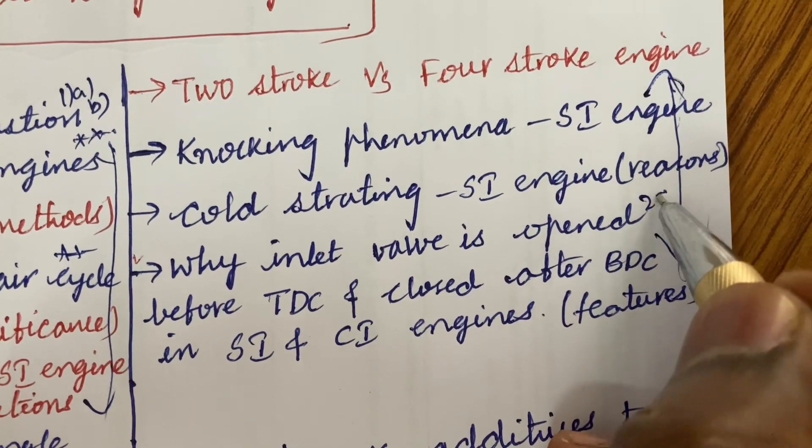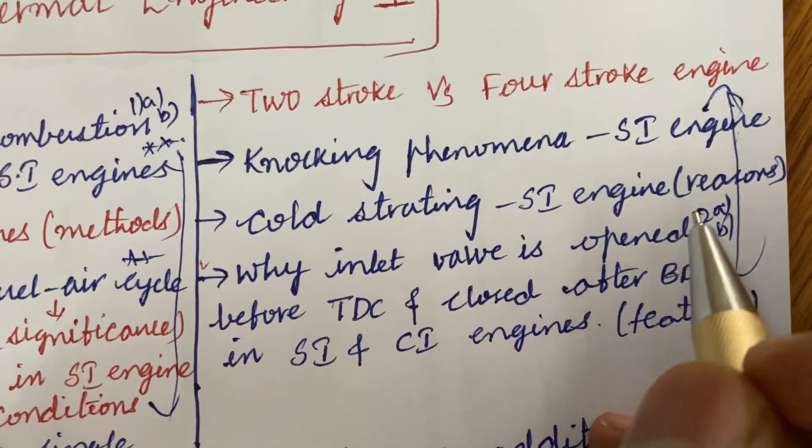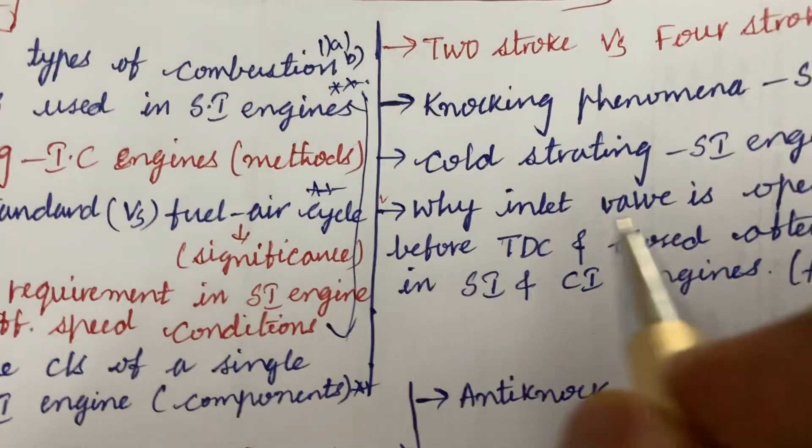From this part, we can expect 2A as well as 2B students. As per the COVID pattern, we will be getting 2 questions, I mean 30 marks from unit 1.